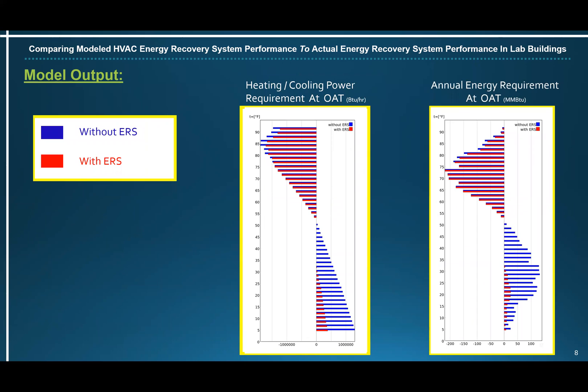Some more model output. The graph on the left shows the heating and cooling power requirement at different outside air temperatures. The x-axis is BTU per hour, and the y-axis is outside air temperature. The blue bar is without energy recovery and the red bar is with energy recovery. The graph on the right shows the annual energy requirement at different outside air temperatures, with the x-axis in million BTUs. You can easily see the reduction in power, peak demand, and annual energy requirement with the energy recovery system.